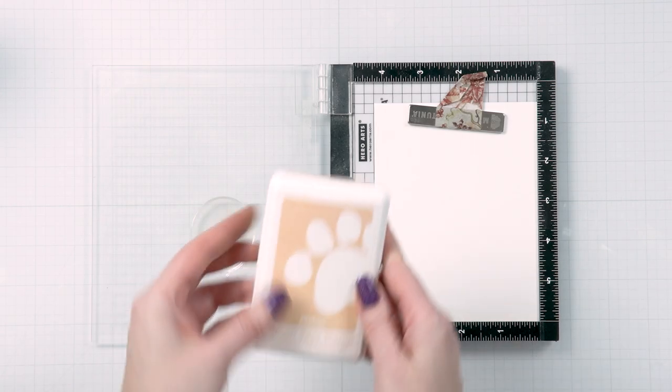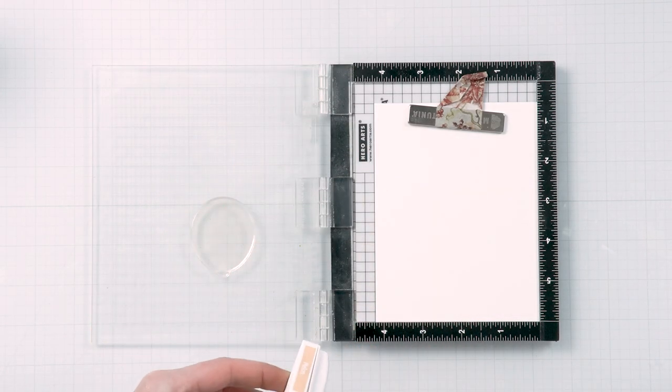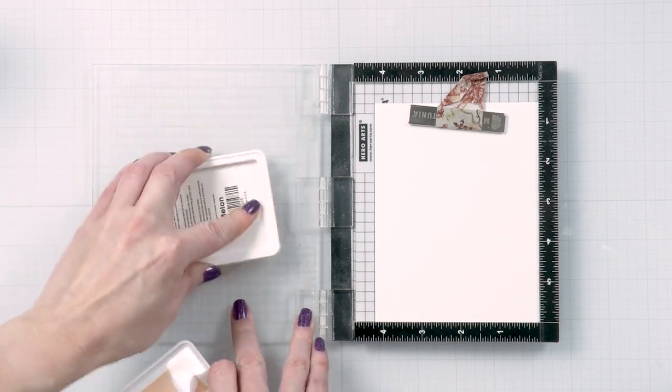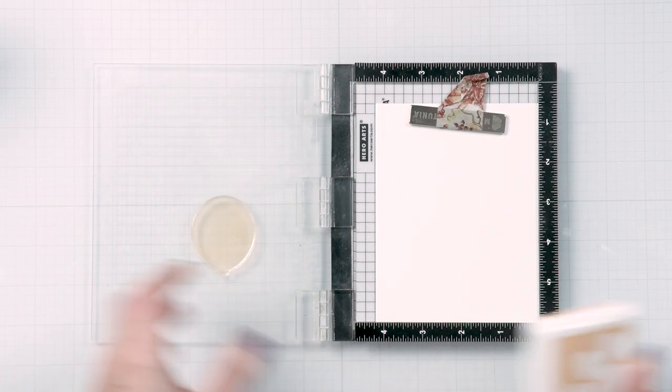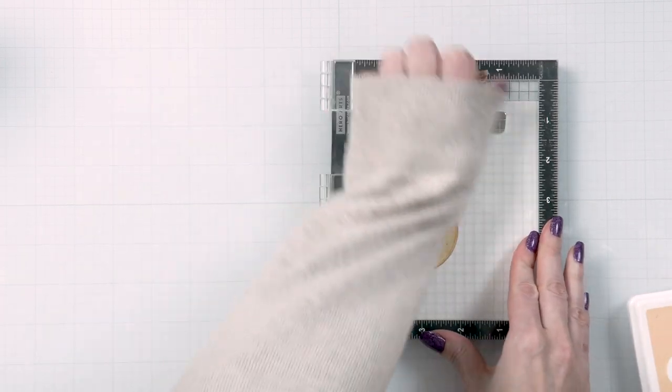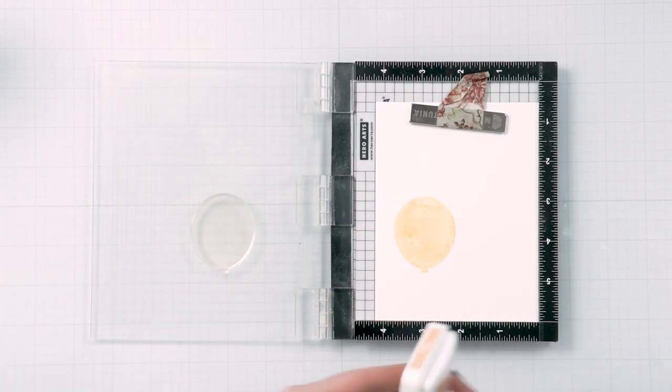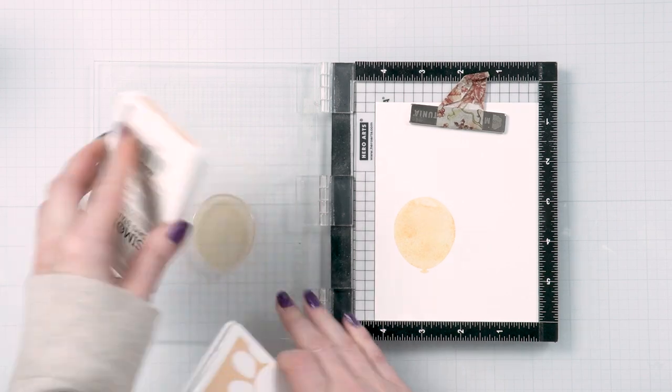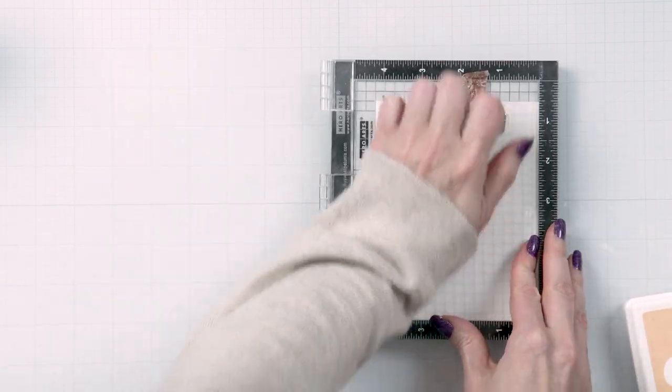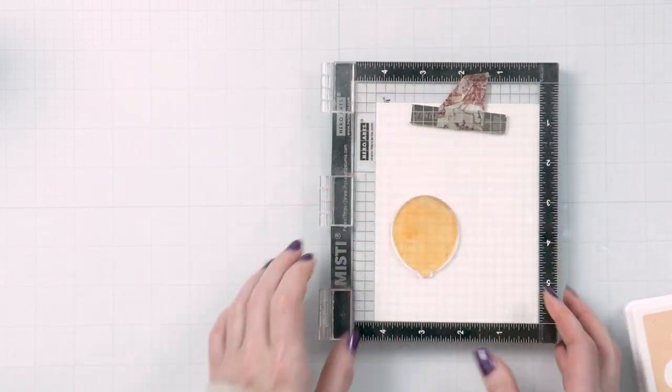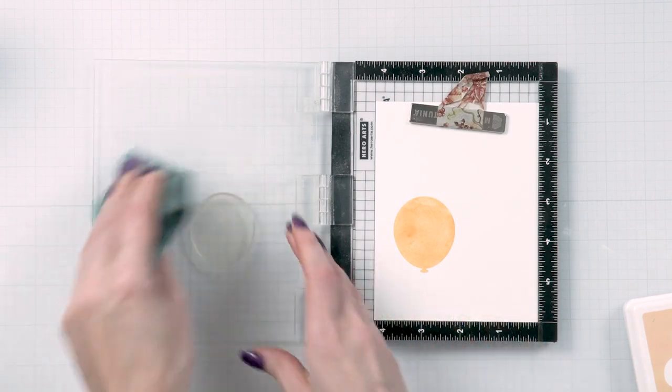I have my mini MISTI stamping tool and white cardstock panel already placed inside my MISTI. I found I needed to double stamp each balloon, so using the MISTI worked really well. I started with a color melon, this is a beautiful pale yellow, more of a cream color, and I stamped it onto my cardstock.